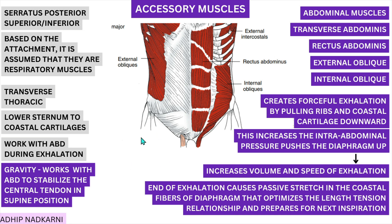In the supine position, gravity acts downward, puts pressure on the abdominal contents, and increases intra-abdominal pressure. This increase in intra-abdominal pressure can stabilize the central tendon of the diaphragm and help the diaphragm move effectively. So gravity, along with the abdominal muscles, helps in both the inspiration and expiration process.